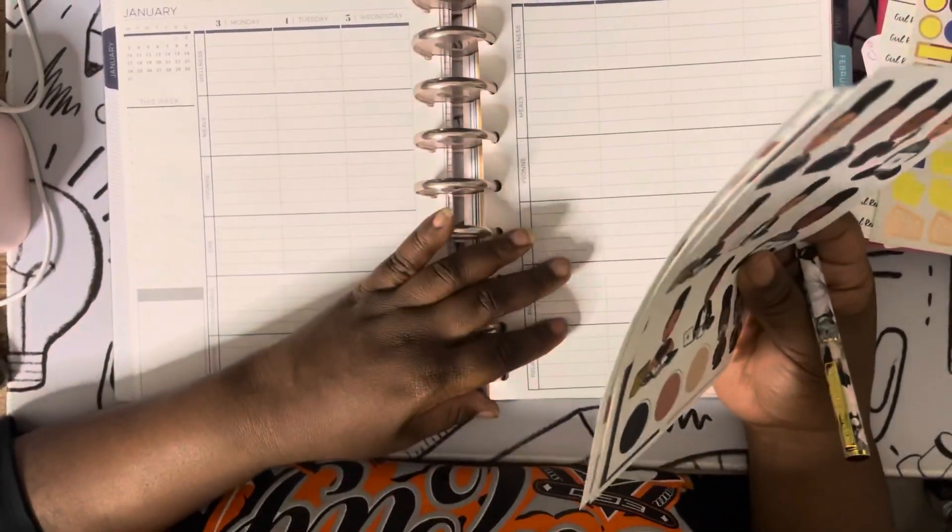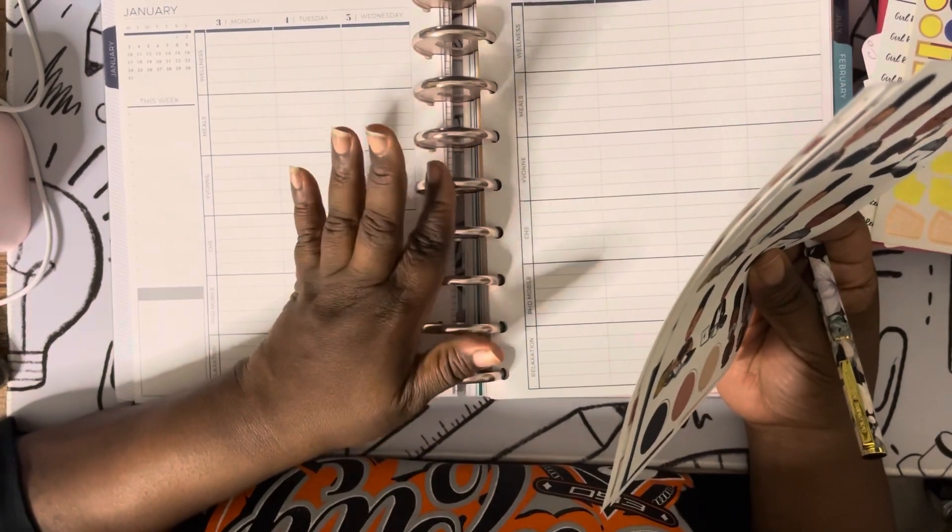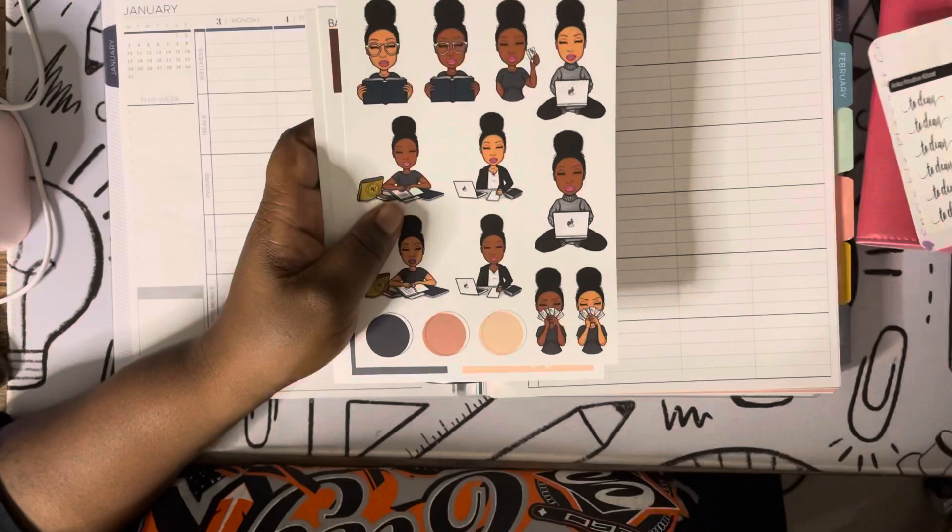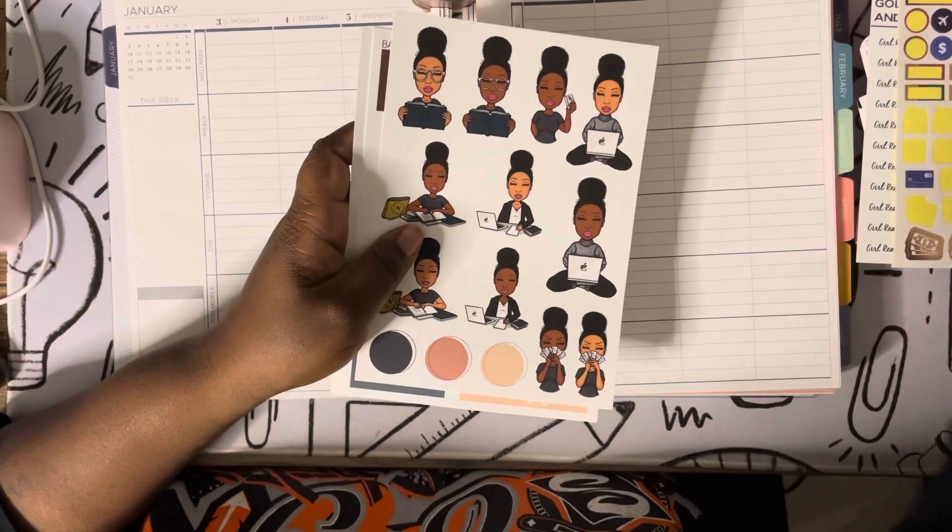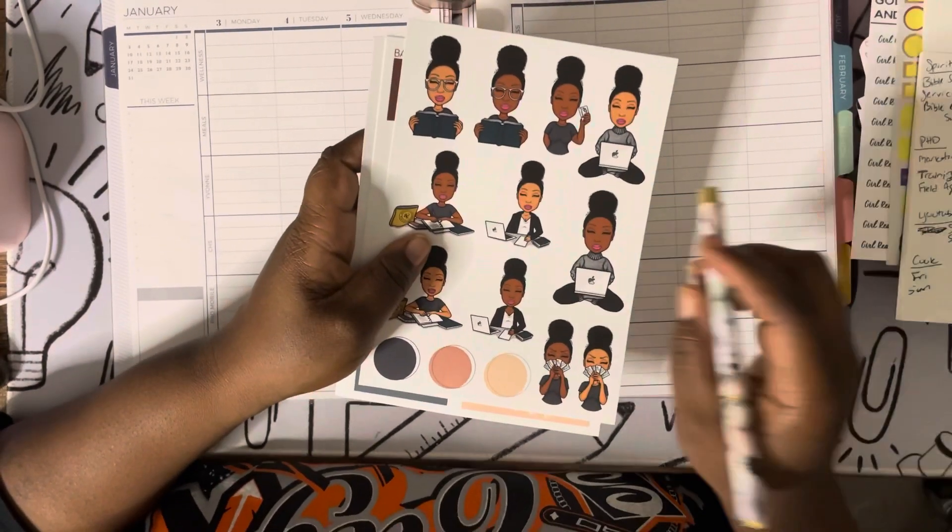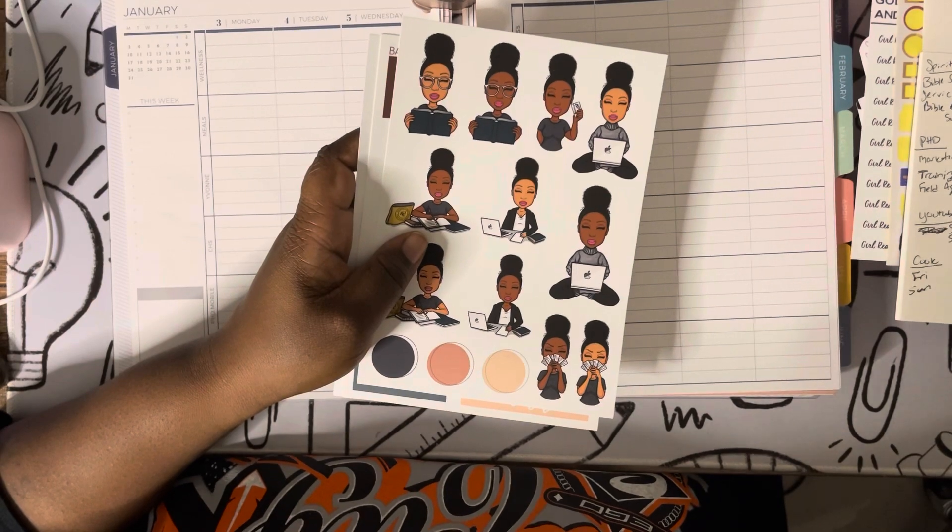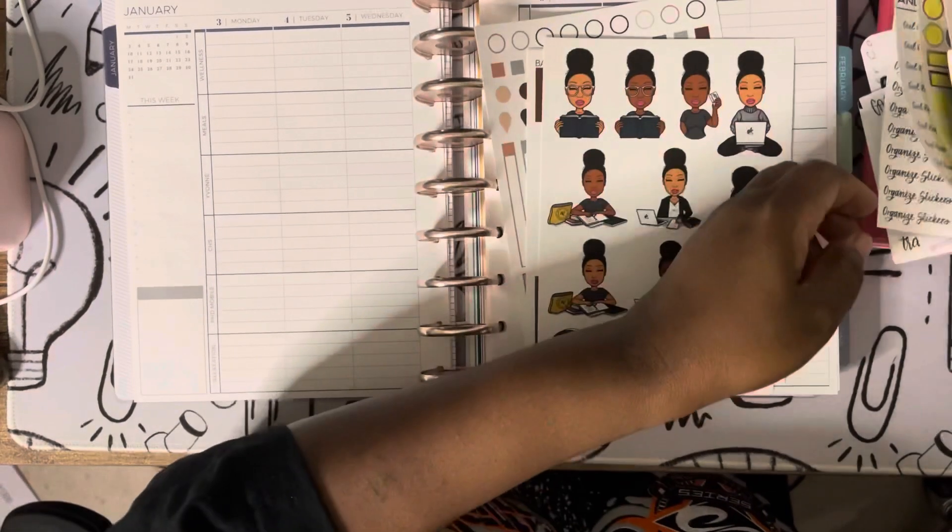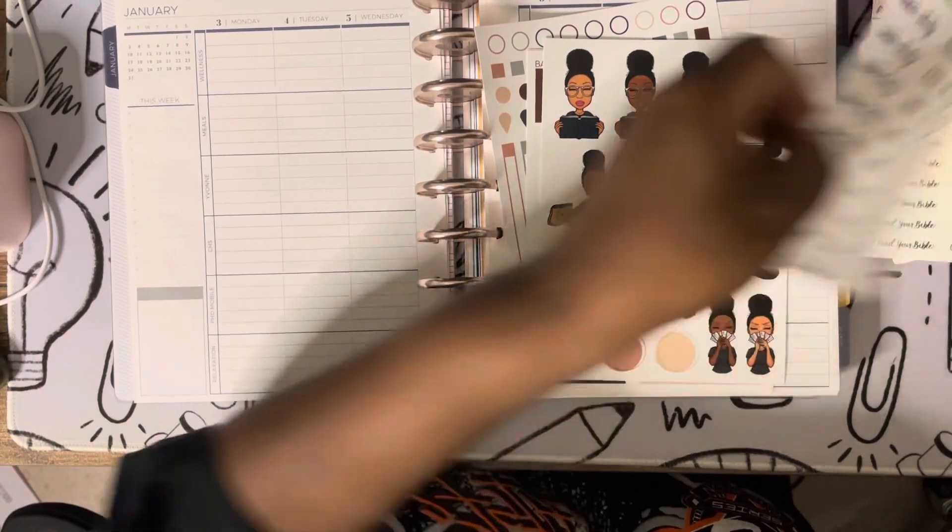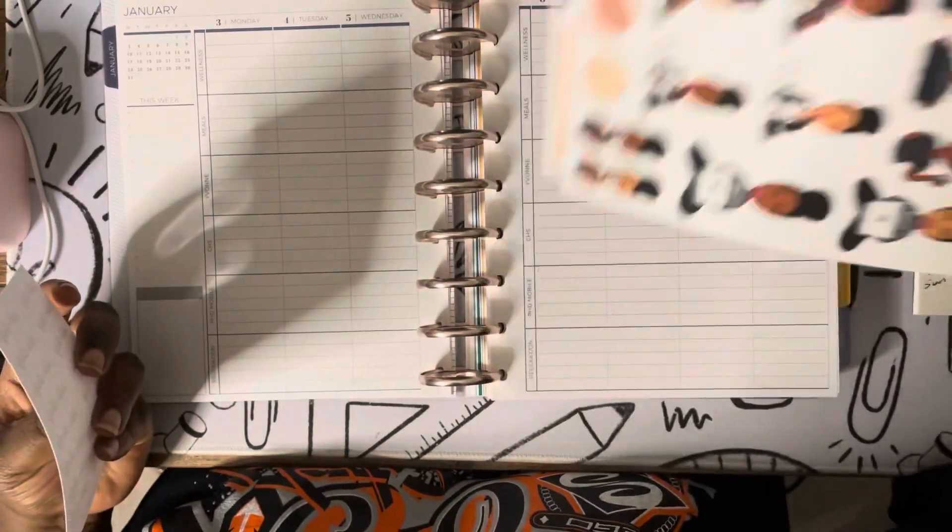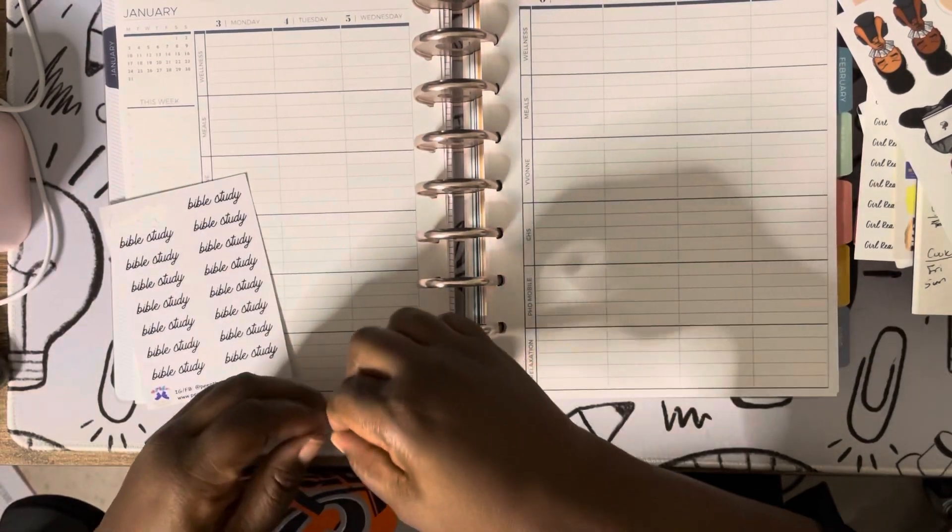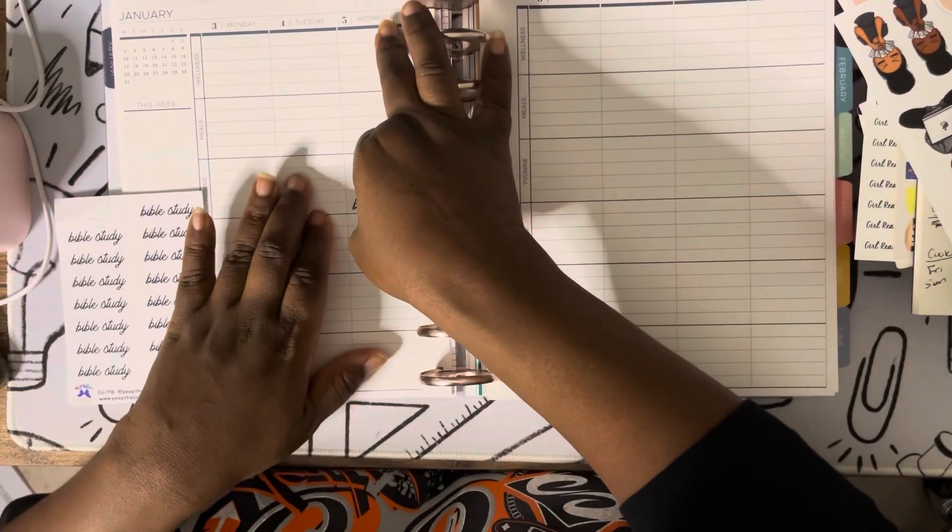So let's see how we're going to do this. I think I want to do the functional part first and then lay down any decorative stickers because I really just want to make sure that I'm doing more functional than pretty planning because I have a bad habit of doing pretty planning. So the first thing I want to look at is, of course, my spiritual because that's the most important to me. And what I have going on this week for that is I have Bible study on Wednesday. So I do have a script sticker for that. So I will put that here.